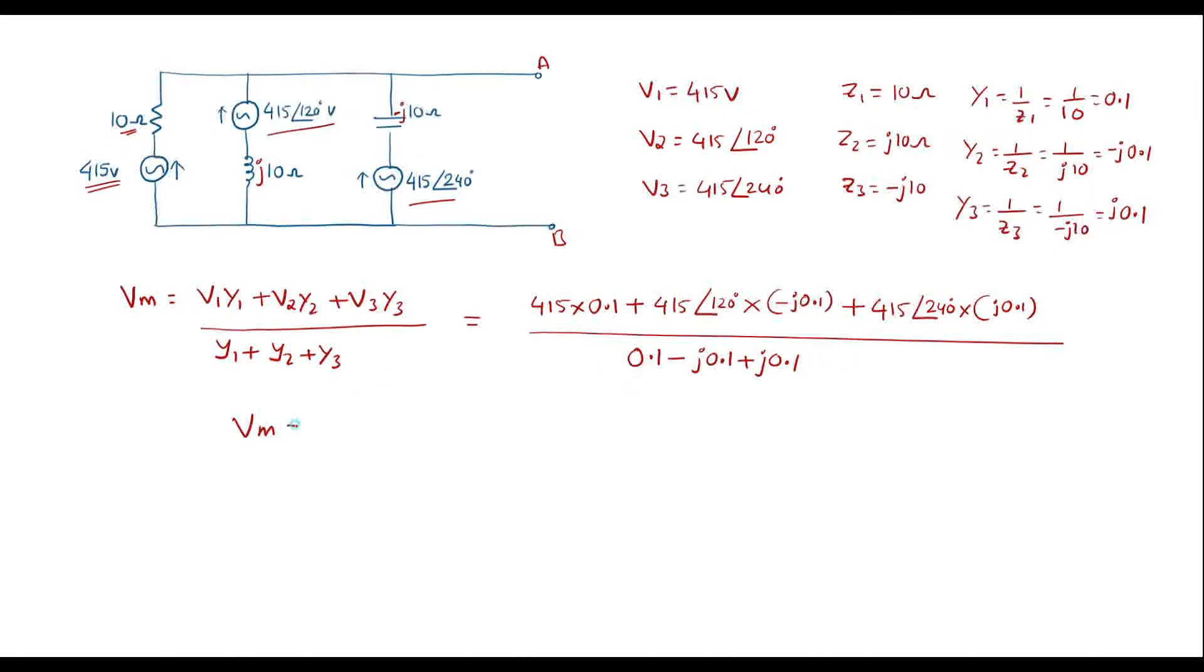Let me simplify this: 41.5 plus 41.5 at an angle of 120 degree plus 41.5 at an angle of 240 degree. In denominator these two will get cancel, we'll get 0.1.